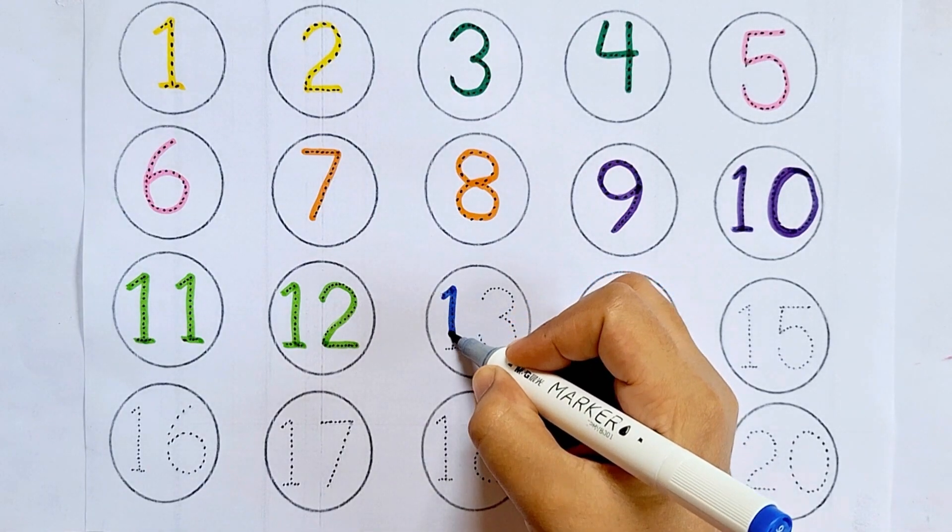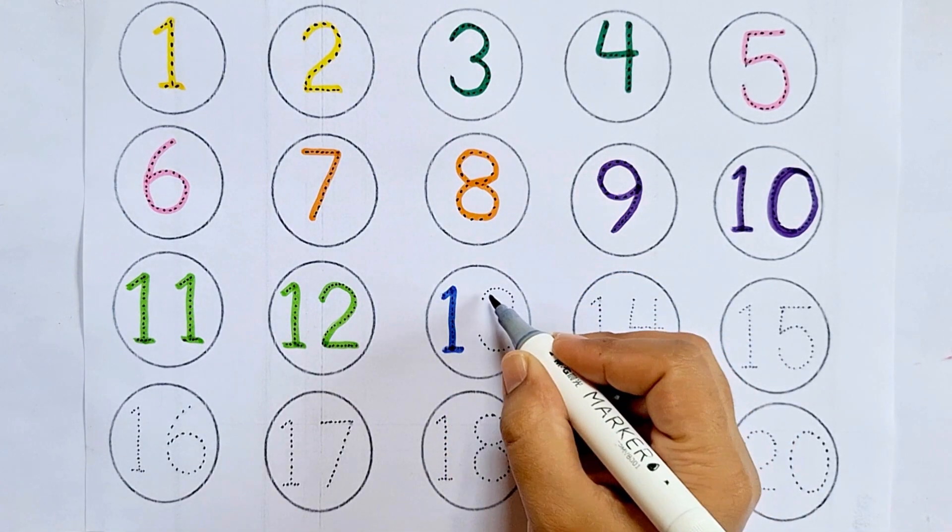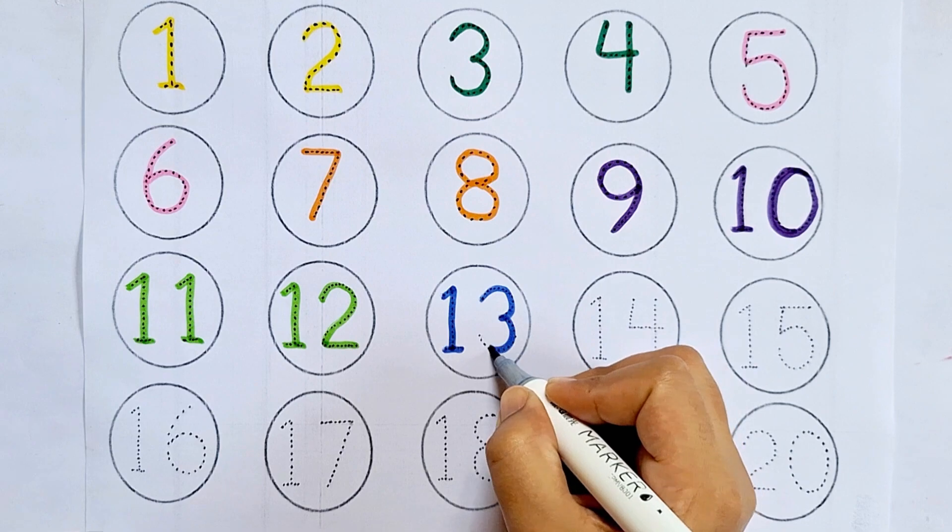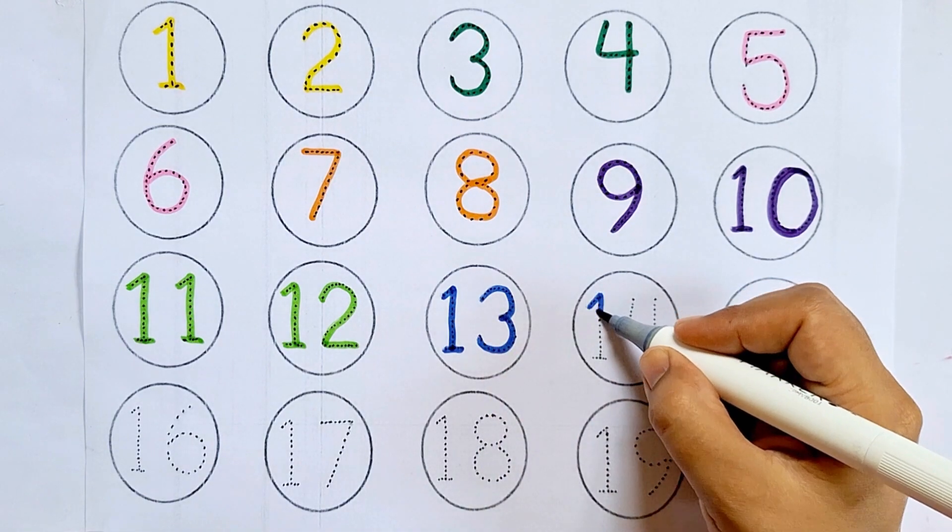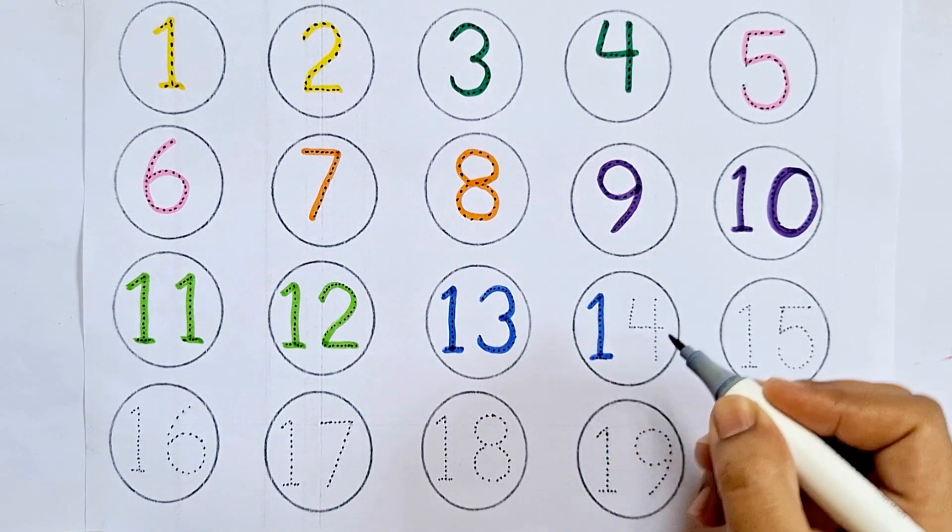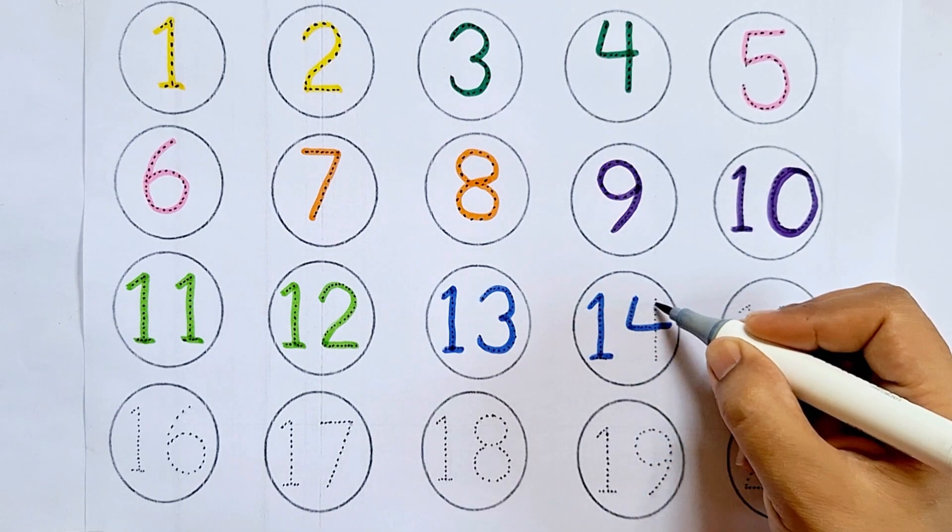Thirteen, this is thirteen. One, three, thirteen. Fourteen, this is fourteen. One, four, fourteen.